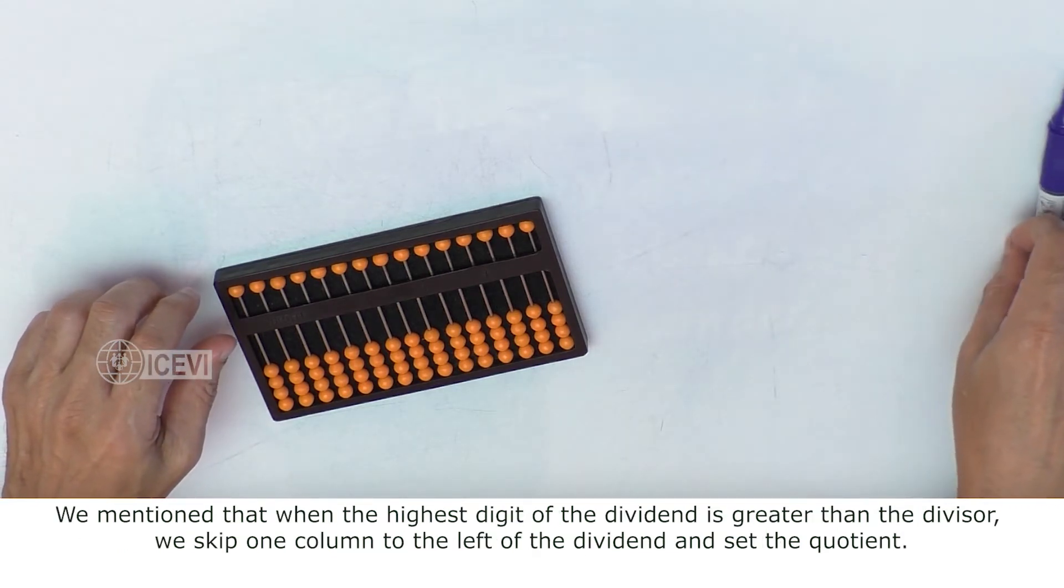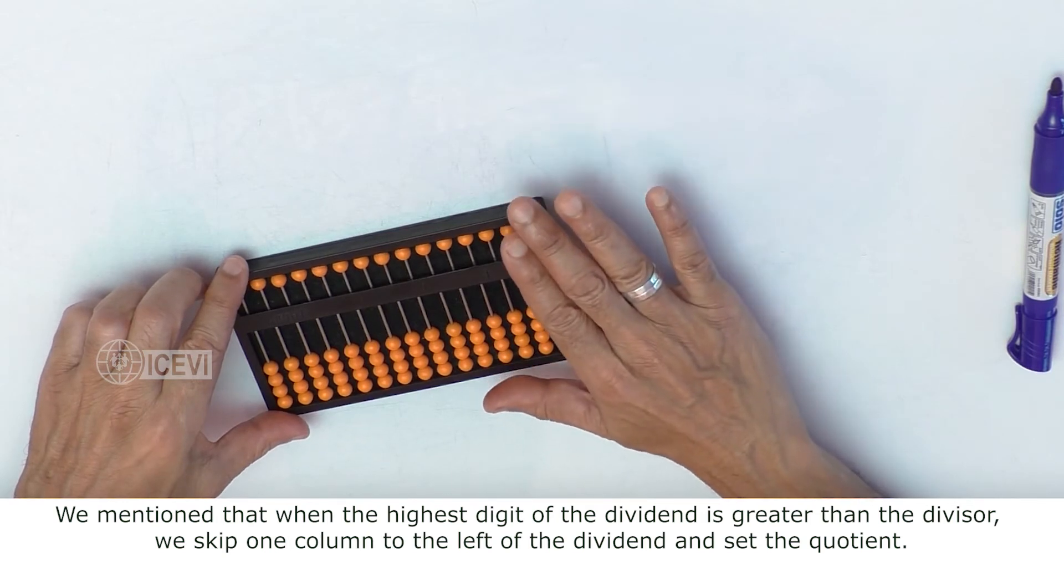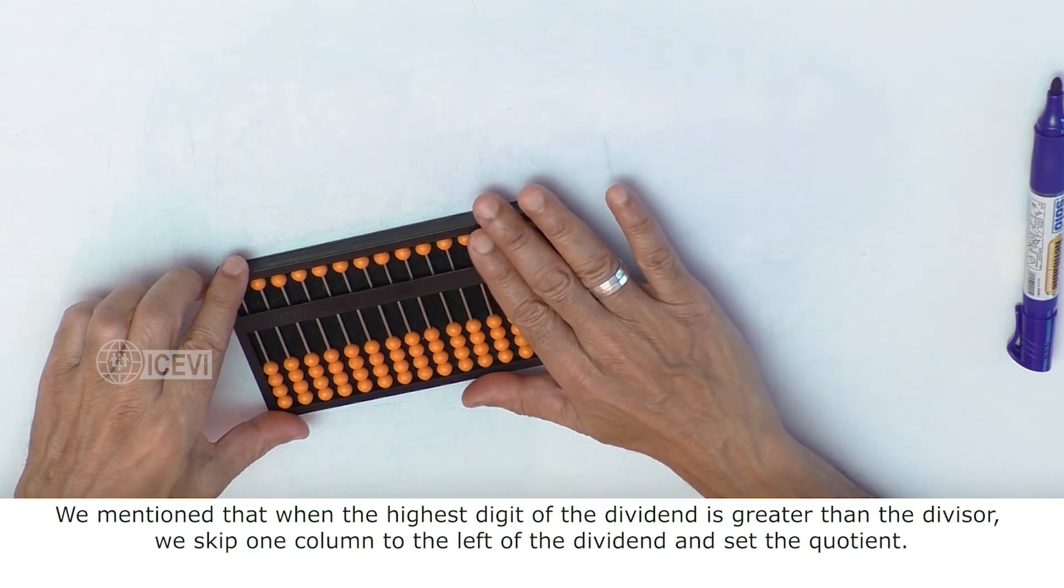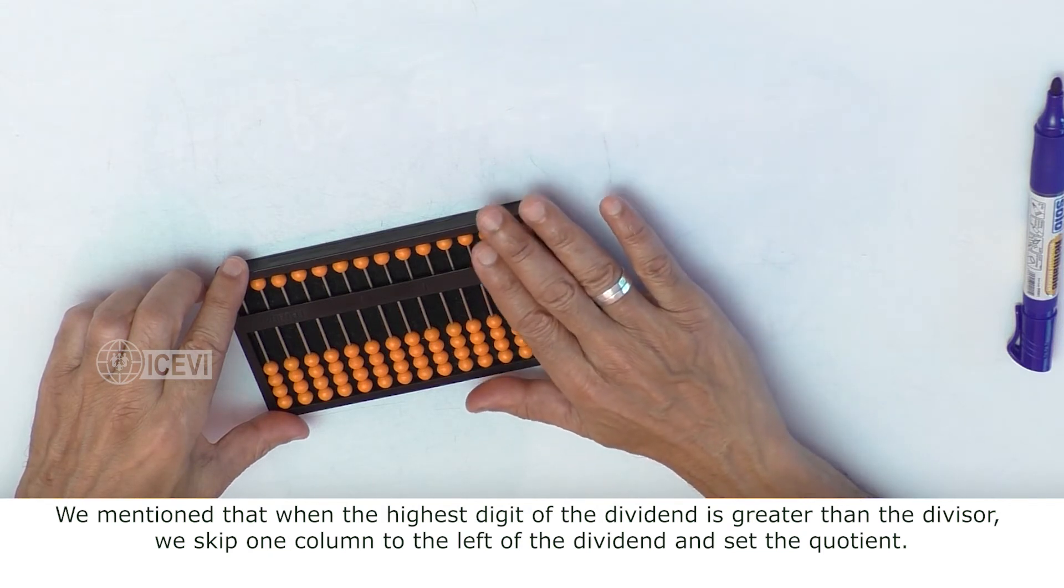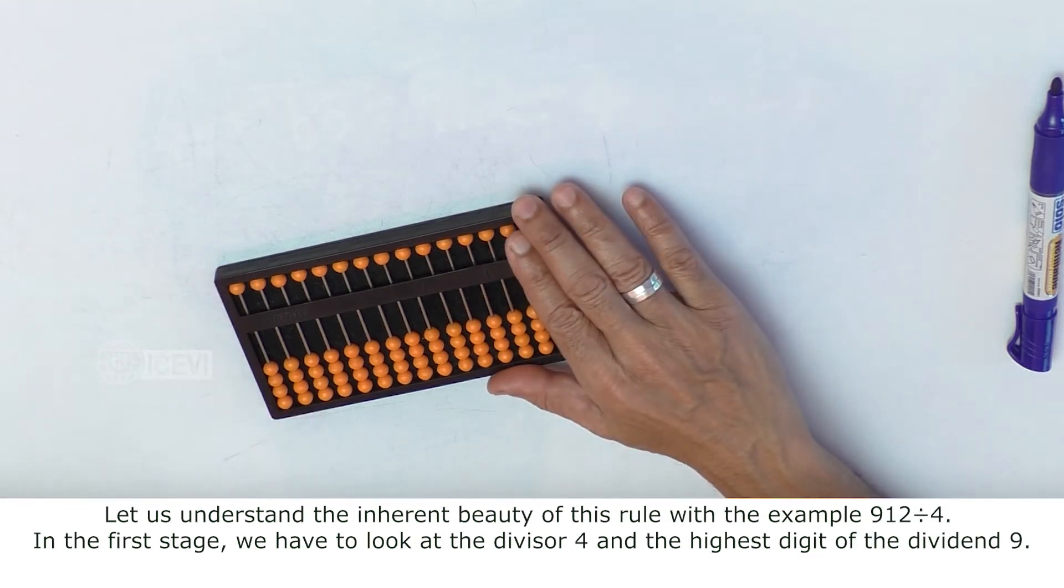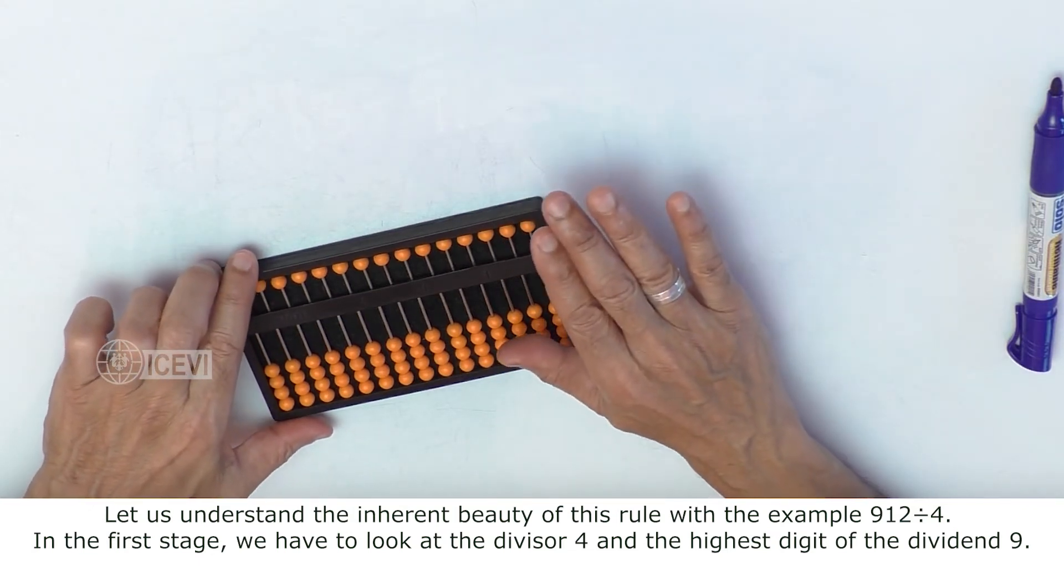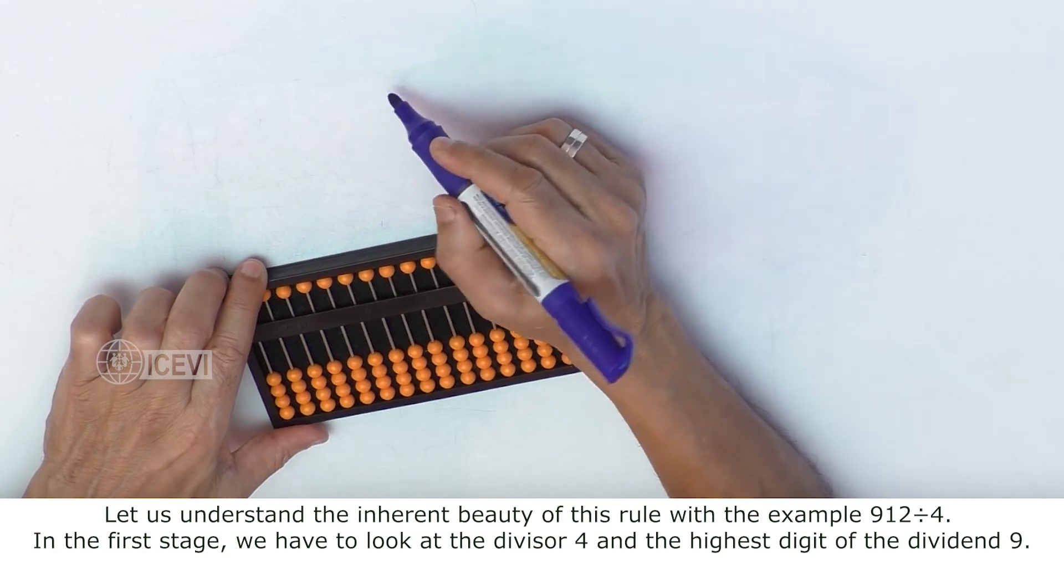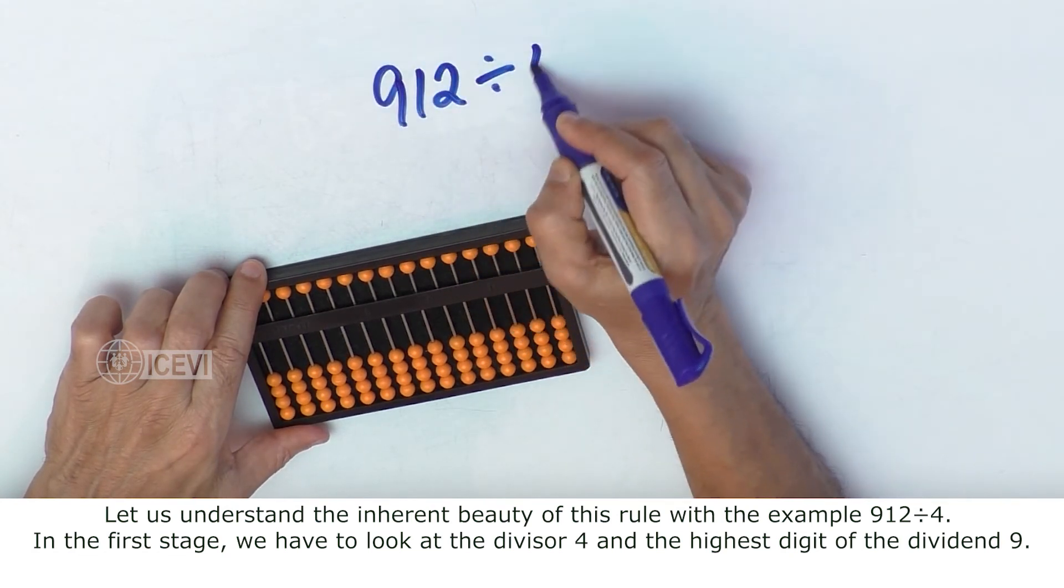We mentioned that when the highest digit of the dividend is greater than the divisor, we skip one column to the left of the dividend and set the quotient. Let us understand the inherent beauty of this rule with the example 912 divided by 4.